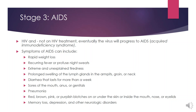AIDS is the late, third stage of HIV infection. Its symptoms include rapid weight loss, recurring fever, extreme and unexplained tiredness, prolonged swelling of the lymph glands in the armpits, groins, or neck, diarrhea lasting longer than a week, sores in the mouth, anus, or genitals, pneumonia, and red, brown, pink, or purple blotches on or under the skin or inside the mouth, nose, or eyelids. There is also memory loss, depression, and other neurological disorders.